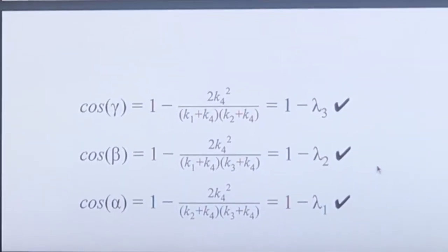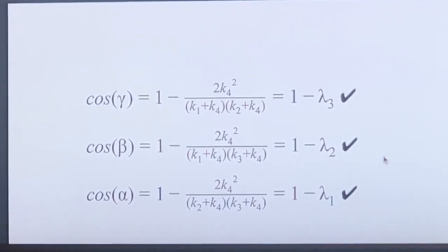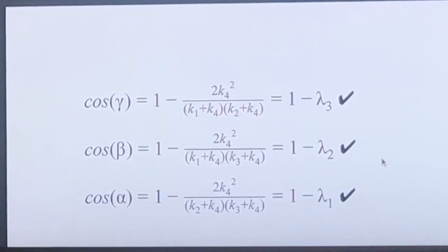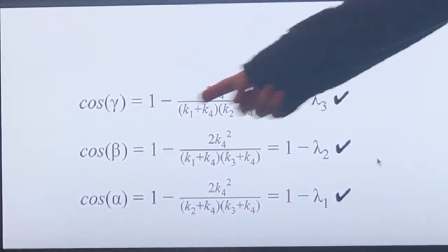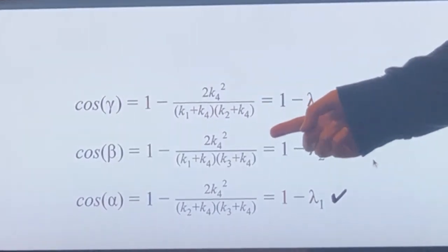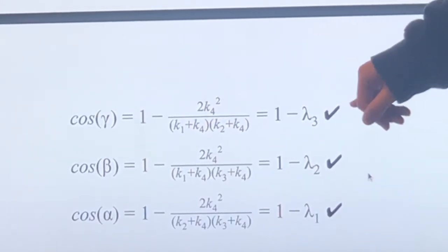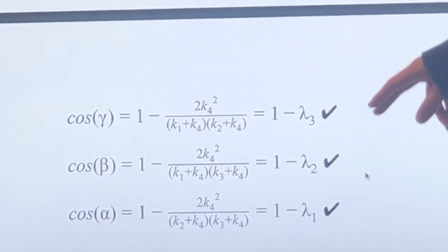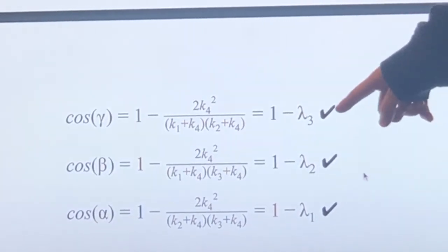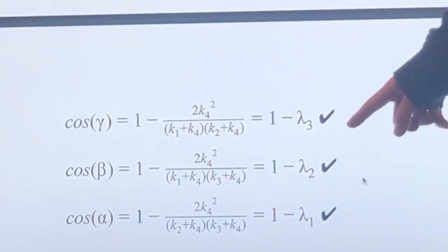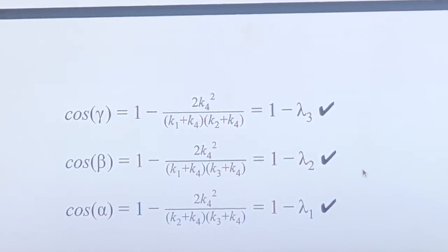Next, we simply use the formula for curvature, which is K = 1/R, and replace all the radius variables, so R1, R2, R3, and R4, in the equation. What we get is this equation right here, and all we do is simply set this big fraction into different lambdas, since they're all pretty similar, to get a simplified version: cos(γ) = 1 - λ₃, cos(β) = 1 - λ₂, and cos(α) = 1 - λ₁.